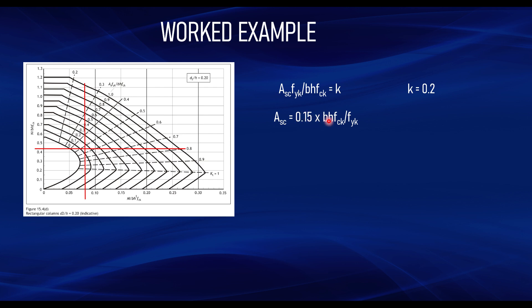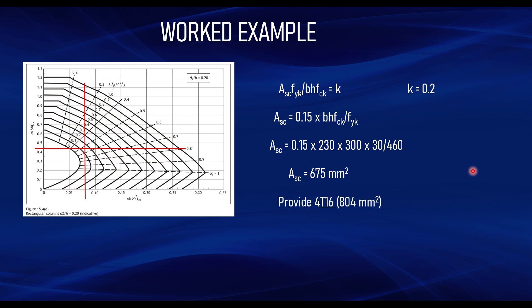Substituting into the formula As = k × b × h × fck over fyk, with k = 0.15 and the known values of b, h, fck, and fyk, we get As = 675 mm². We must provide reinforcement slightly above this value. Four bars of 16 mm diameter give an area of 804 mm², which is adequate. Comparing results, the Eurocode design is more economical than the British Standard. If you found this useful, please subscribe and share the video.